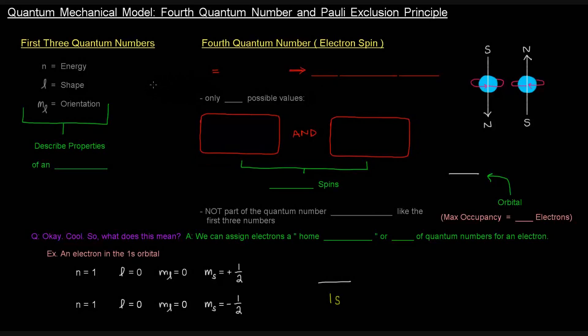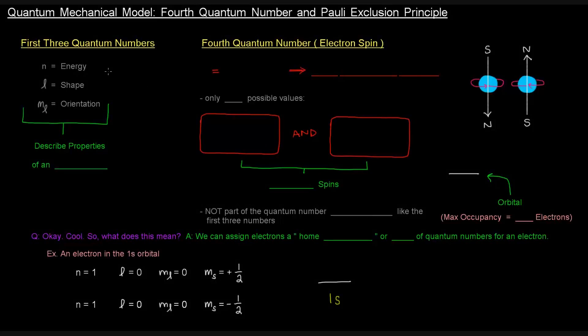So the first three quantum numbers that we talked about were n, l, and m sub l. And of course, n describing the energy, l describing the shape, and the m sub l describing the orientation.